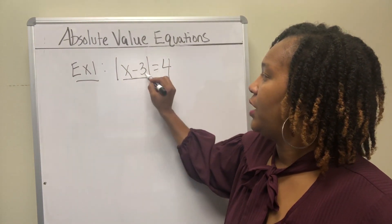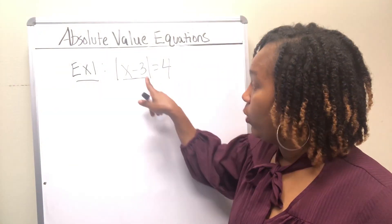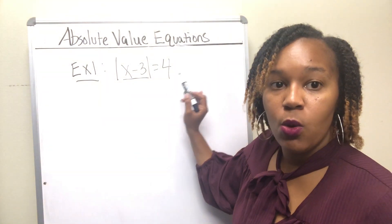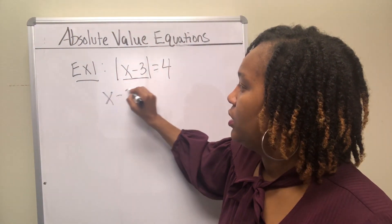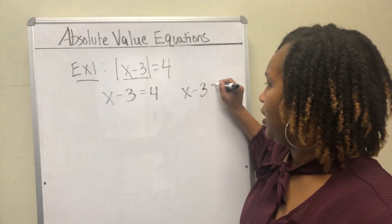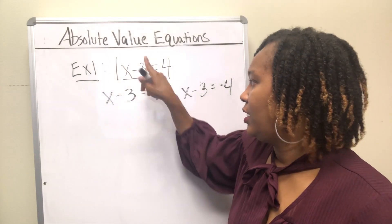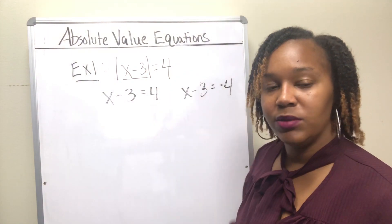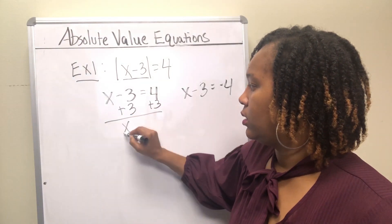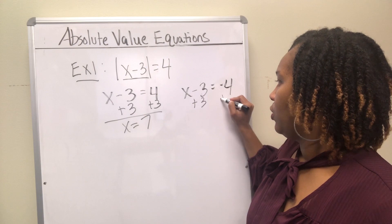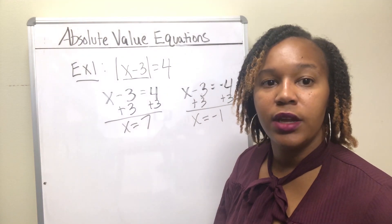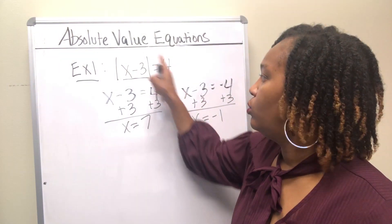We're trying to figure out what x has to be to make this equation true. The inside of this needs to be either equal to 4 or negative 4. So we take x minus 3 and set it equal to 4, and x minus 3 and set it equal to negative 4. Adding 3 to both sides of the first equation gives x equals 7. Adding 3 to both sides of the second gives x equals negative 1. So if x is either negative 1 or 7, you'll get a true statement.